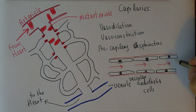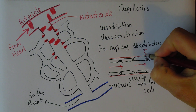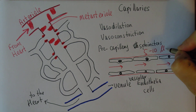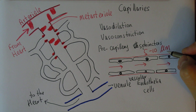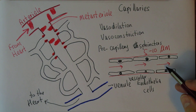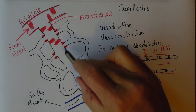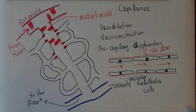Capillaries are five to ten micrometers in diameter — a micrometer being a thousandth of a millimeter. Red blood cells themselves are about seven micrometers in diameter, so sometimes they have to deform and squash to get through some of the smaller capillaries, particularly in the kidney and the brain. Capillaries are about 0.2 to 0.4 of a millimeter long — two to four hundred micrometers in length. So we're on a very microscopic scale here.